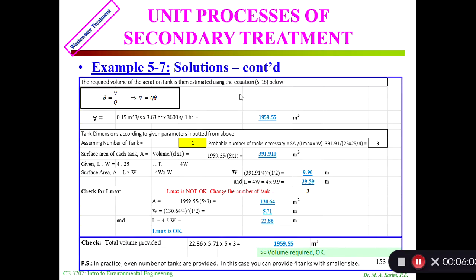From there we'll calculate the volume using equation 5-18: volume equal to Qθ. The volume I got is 1559.55 m³. Now I'm going to do the design. Initially I consider one tank with depth of 5 meters. I calculate the surface area would be equal to volume divided by depth, which equals 391.9 m². Let's consider L to W equal to 4:1, so L = 4W.